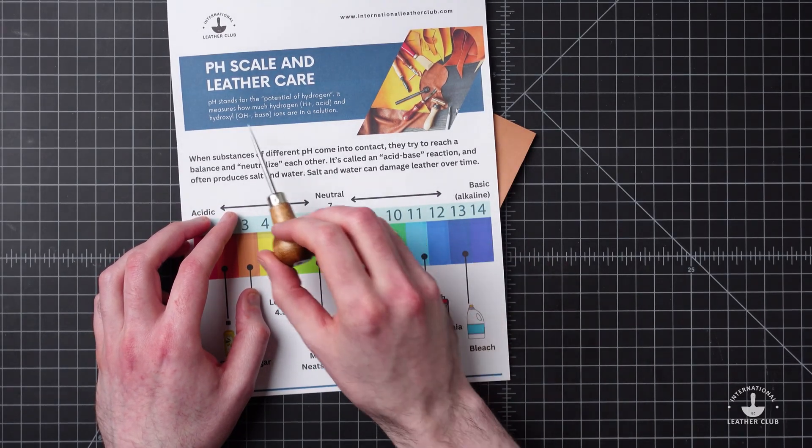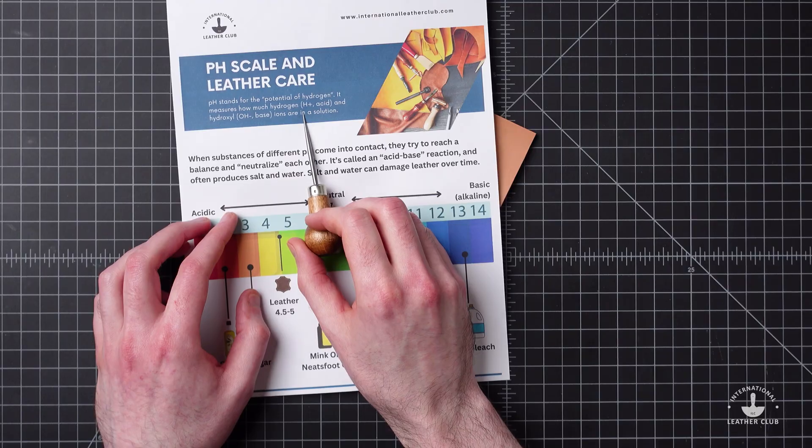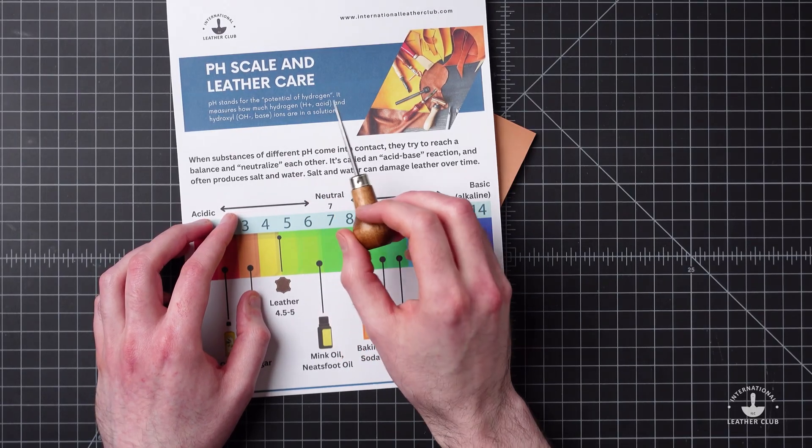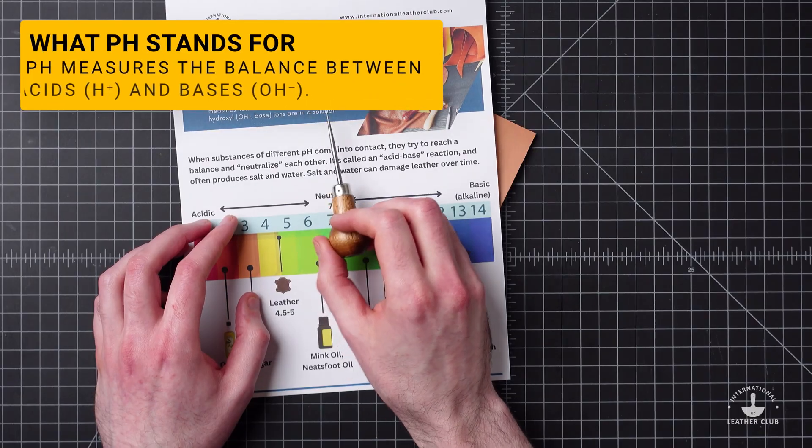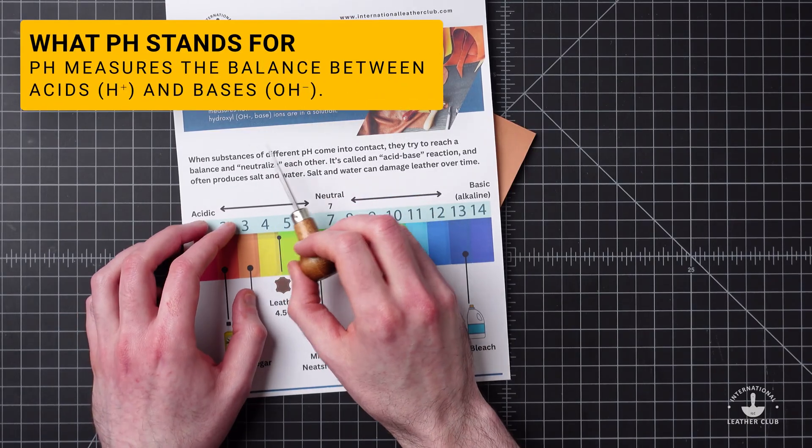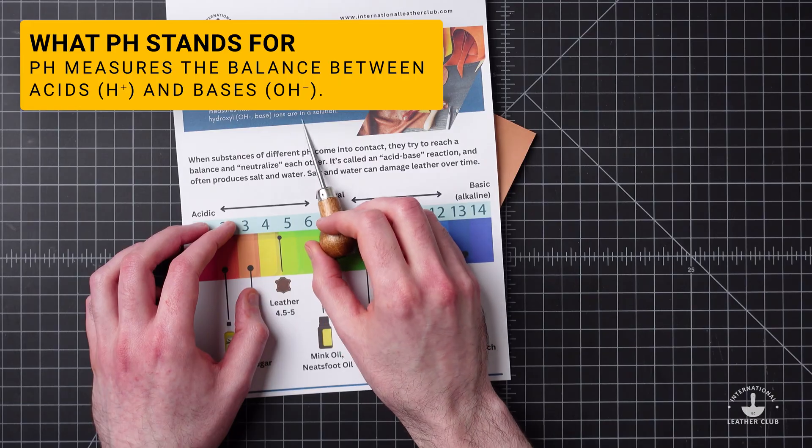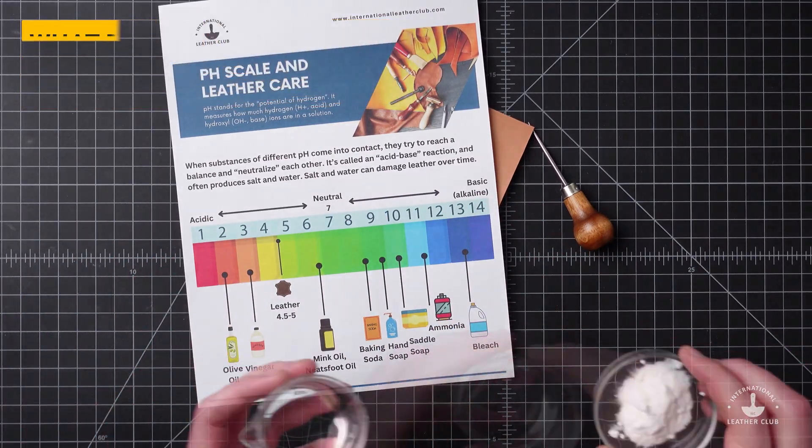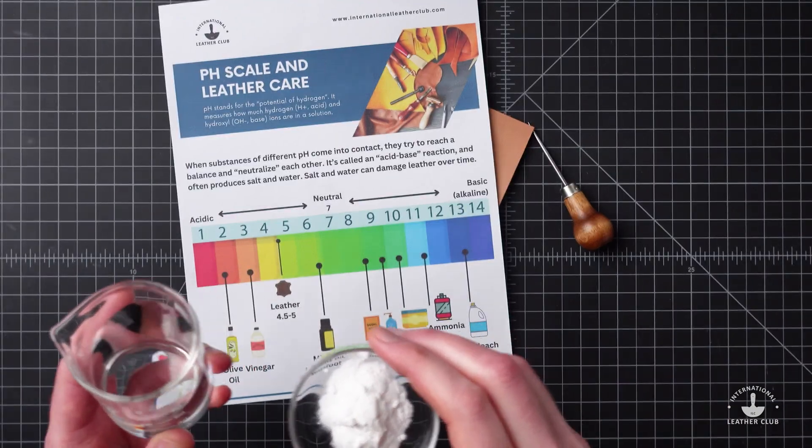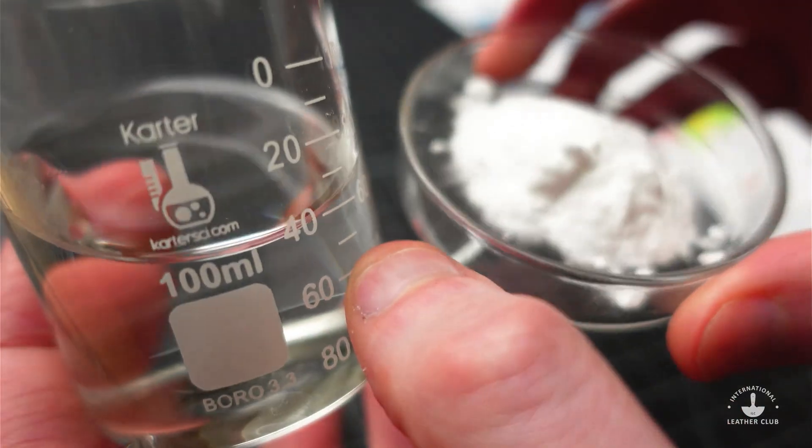It is the potential of hydrogen, and that measures exactly how much hydrogen H+ (which is an acid) and how much hydroxyl OH- (which is a base) are in a solution. A solution is pretty much any kind of mixture that you've got - really any kind of substance is going to have some combination of acids and bases for the most part.